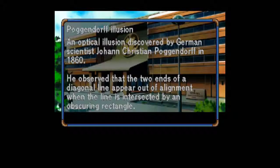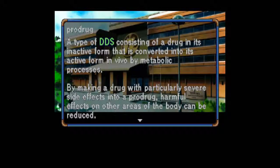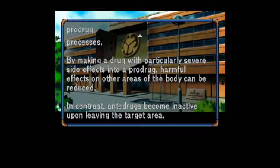Poggendorf Illusion: An optical illusion discovered by German scientist Johann Christian Poggendorf in 1860. He observed that the two ends of a diagonal line appear out of alignment when the line is intersected by an obscuring rectangle. I don't know what that has to do with anything. Pro-drug: A type of DDS consisting of a drug in its inactive form that is converted into its active form in vivo by metabolic processes. By making a drug with particularly severe side effects into a pro-drug, harmful effects on other areas of the body can be reduced. In contrast, anti-drugs become inactive after leaving the target area.